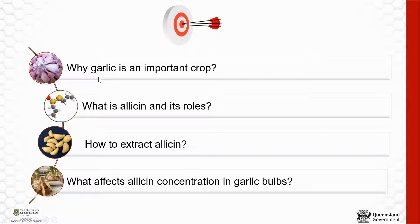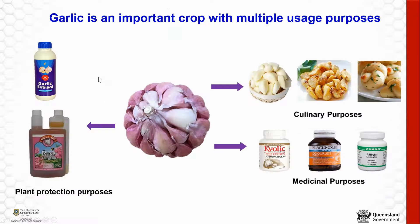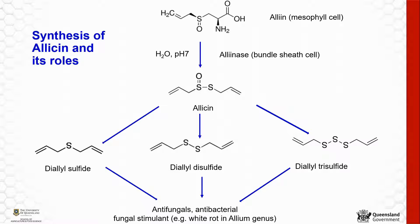Garlic has been cultivated since ancient times as fresh vegetables for culinary purposes or as materials for medicinal purposes. Recently, garlic extracts can be used for plant protection processes as well. Its unique flavor and potential bioactivity is contributed by allicin.